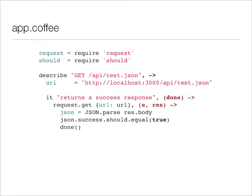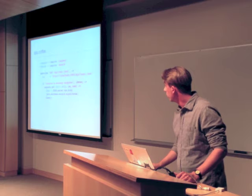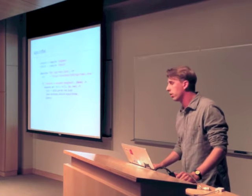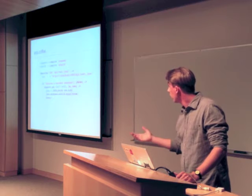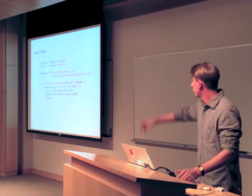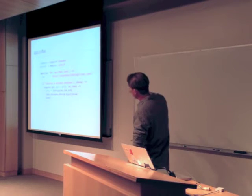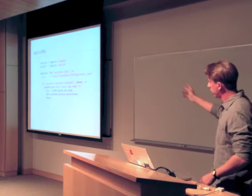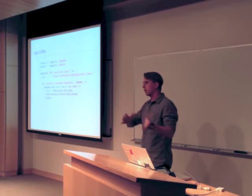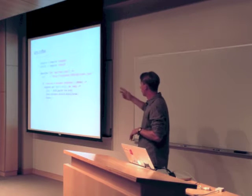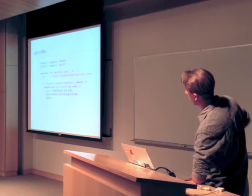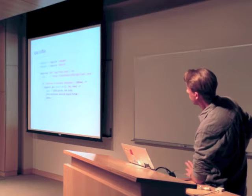And this should be our app underscore test dot copy file. You can see we're requiring request and should so that we can use them. And similar to our spec, we're saying like, describe this route. And then we're saying it should return a success response. We're calling request dot get URL. That's just the rules of the request library. And we either get an error back. Usually node will try to send an error first. And then, if not, it will send a response. So you pass those two and call back, basically. And here, we're just looking for the response to be success true. And then we call done at the end.